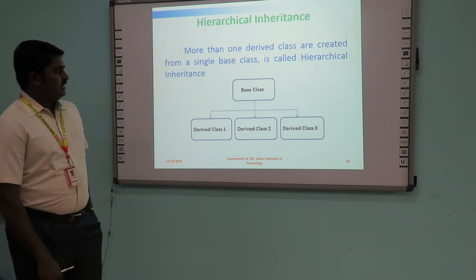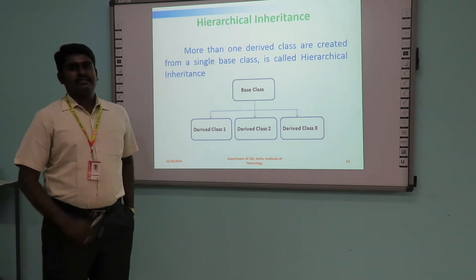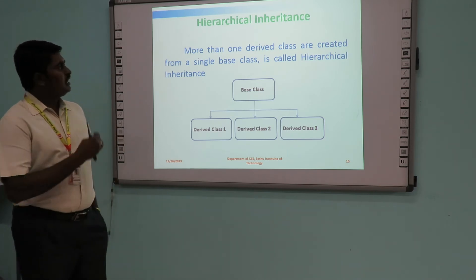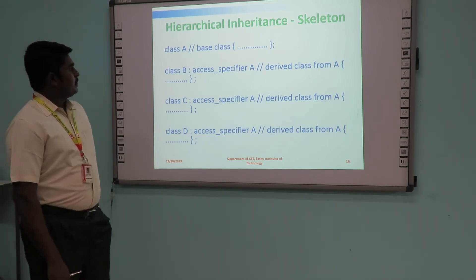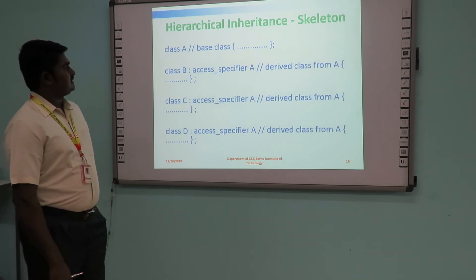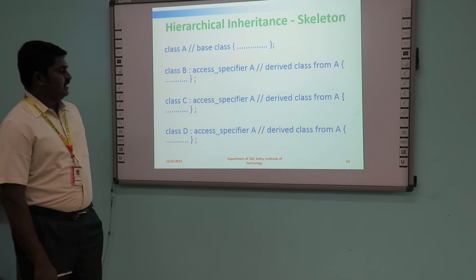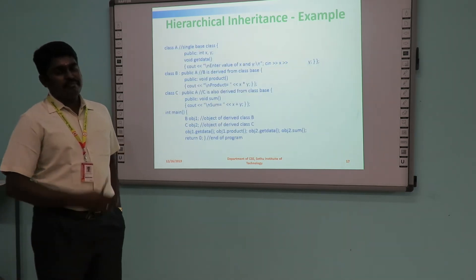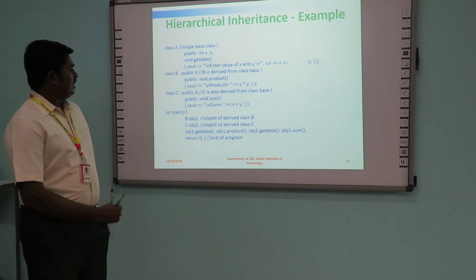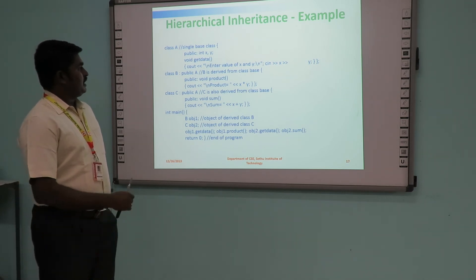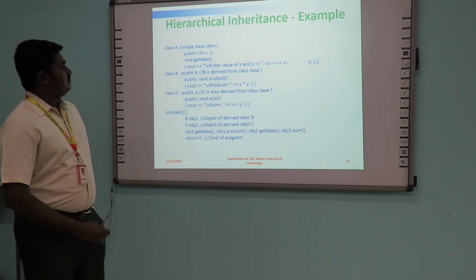The fourth type is hierarchical inheritance. Here we have one base class but more than one derived class — a single base class for more than one derived class. That is called hierarchical inheritance. The syntax shows base class A with derived classes B and C, each inheriting from A. In the example, class A is the base class and classes B and C are derived classes. After creating the object for class C, the members of A and C will be available.